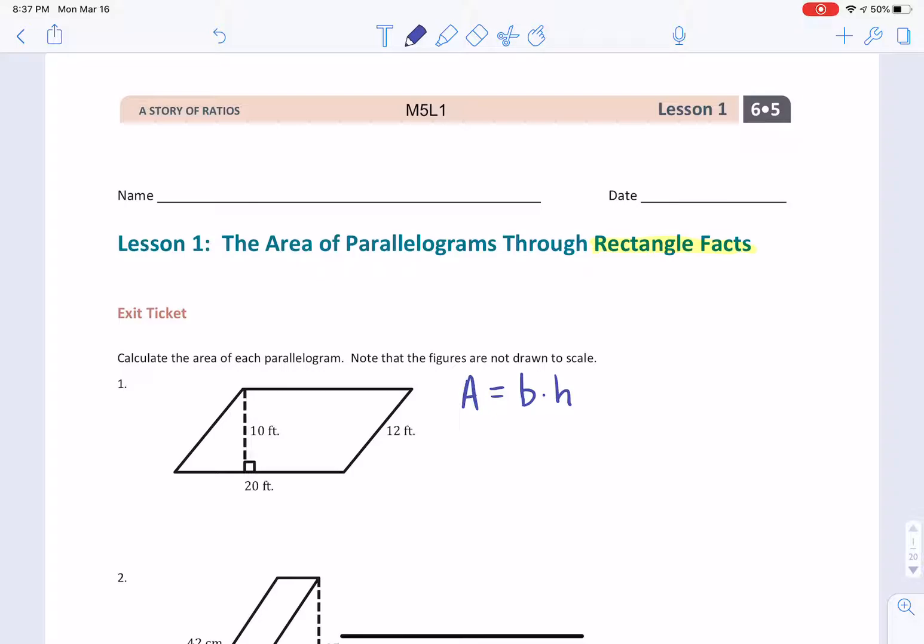So the base, number one, the base of this rectangle is 20 feet. The height of this parallelogram is 10 feet. And we do simple multiplication there, and we get 200 feet squared. The area of this parallelogram is 200 feet squared.